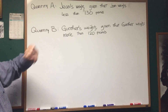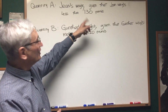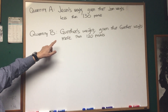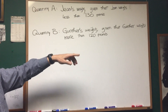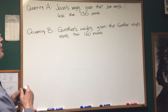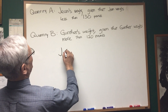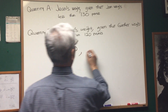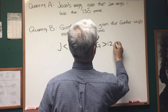Quantity A is Gene's weight, given that Gene weighs less than 130 pounds. Quantity B is Gunther's weight, given that Gunther weighs more than 120 pounds. So we have: Gene's weight is less than 130, and Gunther's weight is more than 120.